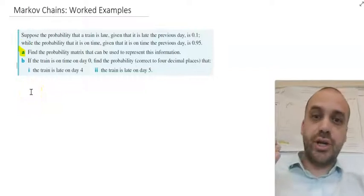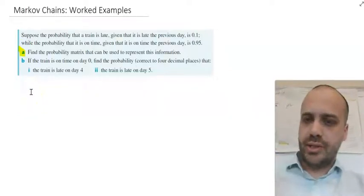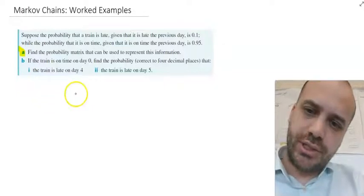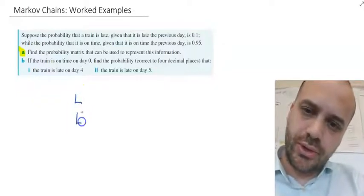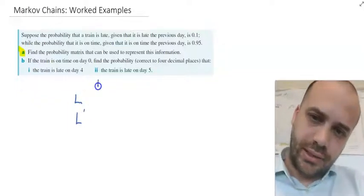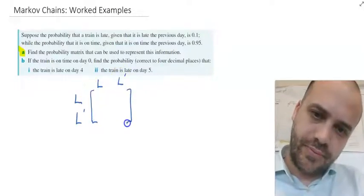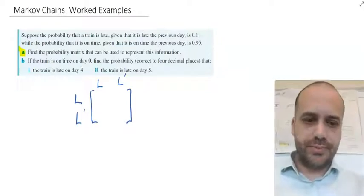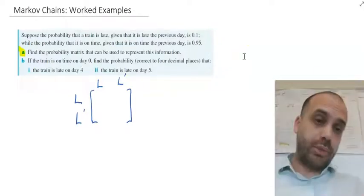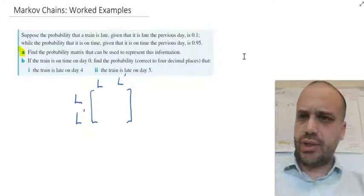This train can either be late or not late. So let's create our matrix as late or not late, late or not late. And this is our transition matrix. This question is calling it our probability matrix. Let's jump into it.